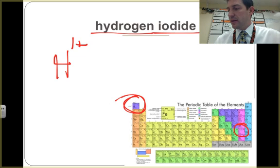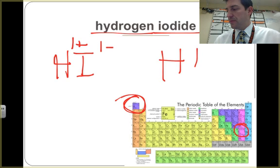And for iodine, iodine we have one minus. So, we end up with hydrogen iodide.